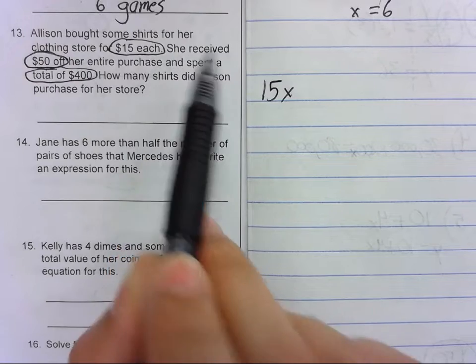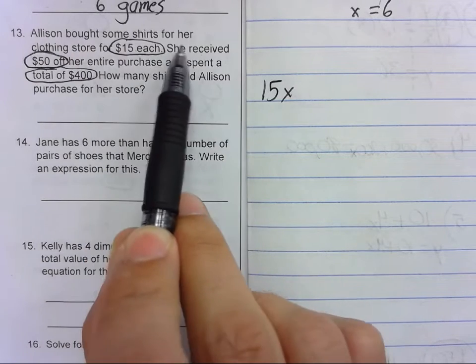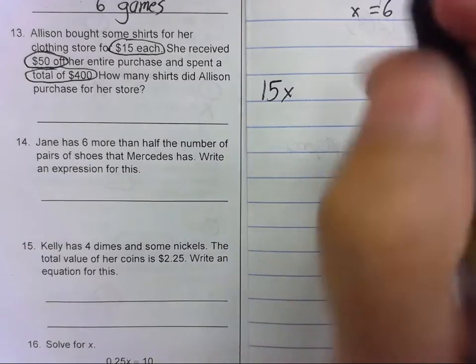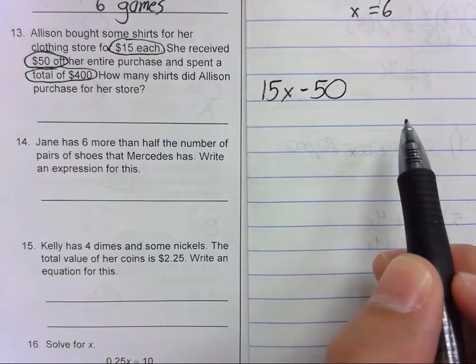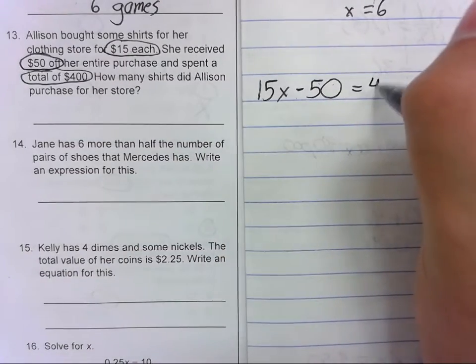Now here's the important thing—it's a little different than what we've been doing, in the sense that we normally have been adding. On this study guide, after she buys the shirts, she receives $50 off. So she buys the shirts and it's going to be $50 less, so subtract 50. And then there's the total of 400.